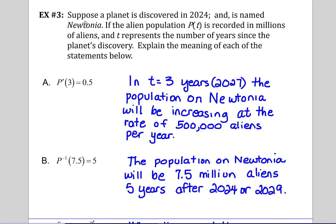So P prime of three equals a half. That tells me if population is a function of time, population is a function of time, population is in millions, and it's a function of time and time is the years, then P prime of three equals a half would be dP/dt. The rate of change of population with respect to time at t equals three years is a half. So that tells me in three years, which would be 2027, the population on Newtonia will be increasing at the rate of a half a million aliens per year, because the time was recorded in millions.